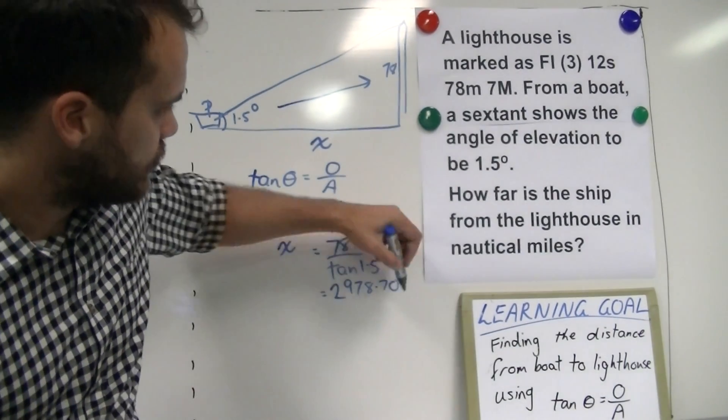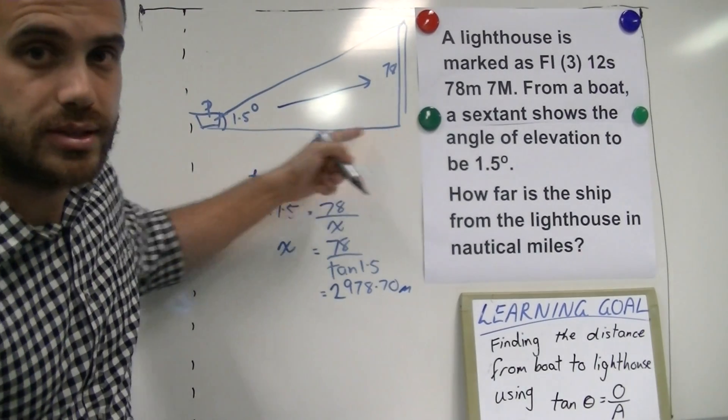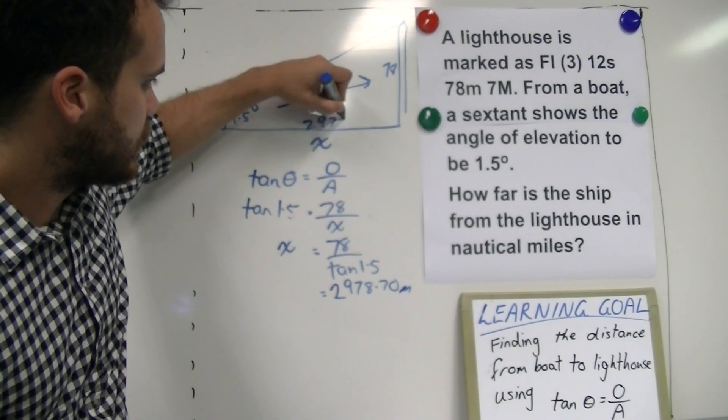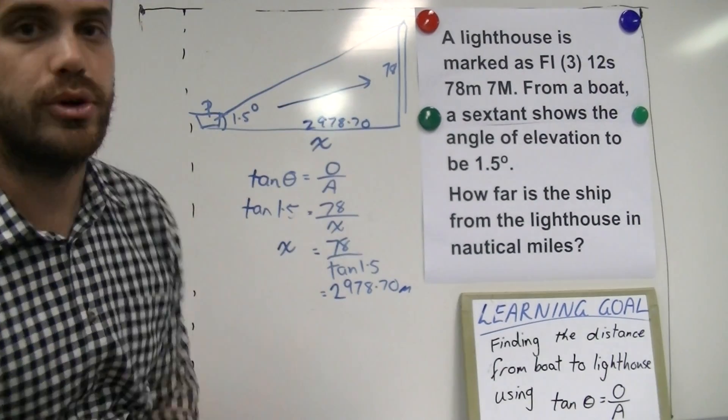Once you've got that, that tells us that the distance from boat to lighthouse is 2978.70 metres.